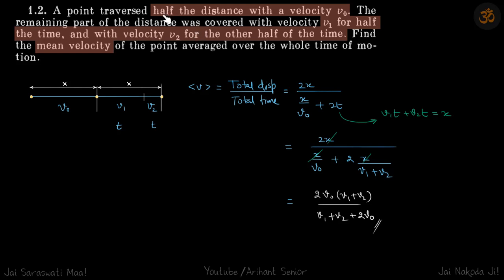A point travels half the distance with a velocity v0. For the other half, it travels with v1 for half the time and with velocity v2 for the other half of the time. We need to find the mean velocity for the whole period.